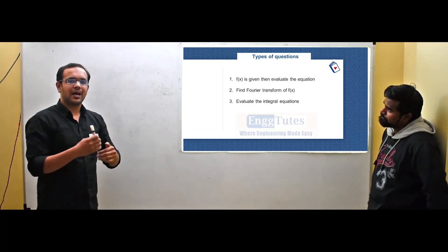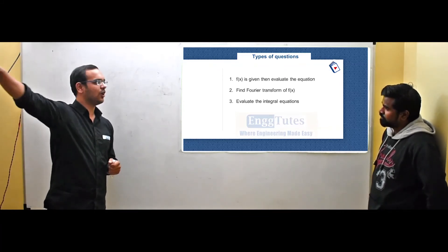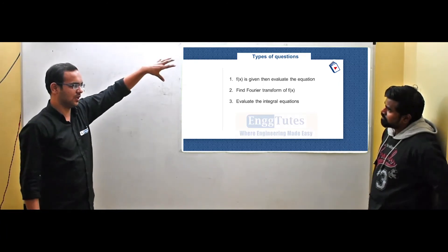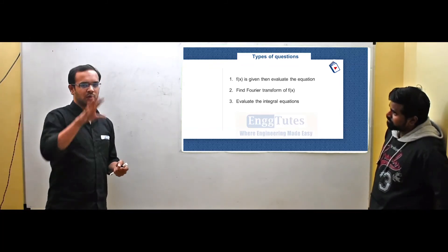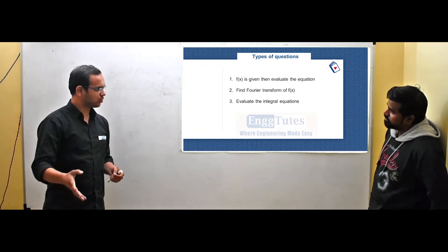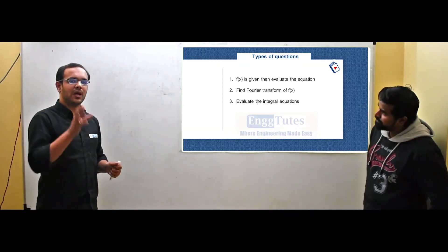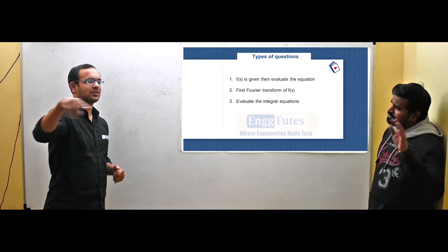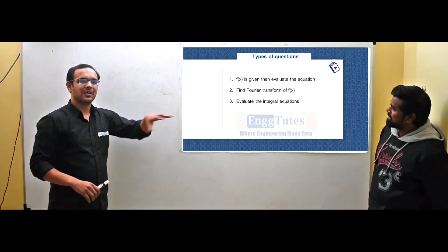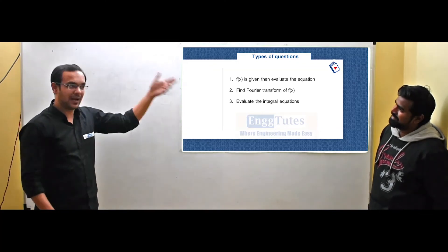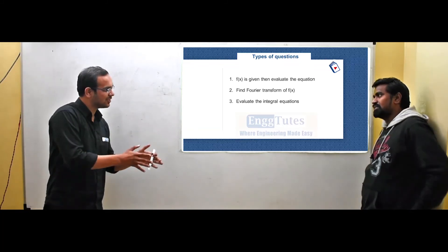So there are three types of questions in Fourier transform. Type 1 means: if F is given, prove something or evaluate something. That is type 1. Type 2 is: find the Fourier transform of f of x - so find the Fourier transform, the Fourier sine transform, or the Fourier cosine transform using the formula. Type 3 involves integral equations: you take the integration of the expression and solve it. The mechanical group mostly gets Laplace questions, but the Fourier question types are also relevant.